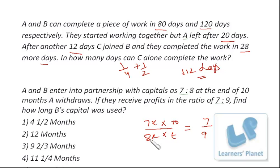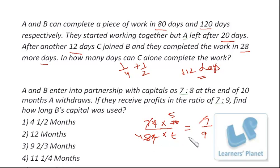So 7 times 10 to 8 times T equals 7 to 9, which gives us 70 to 8T equals 7 to 9. Solving, T equals 45 by 4, that is 11 and one-fourth months. Pretty simple. I hope you are clear with both the problems.